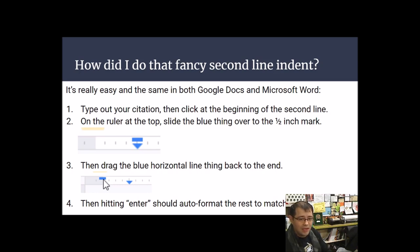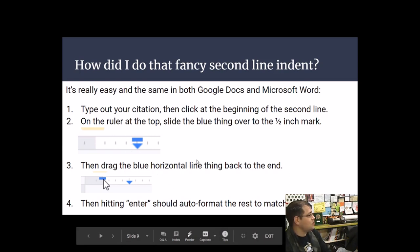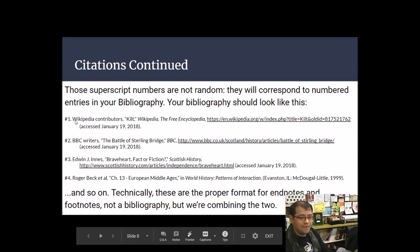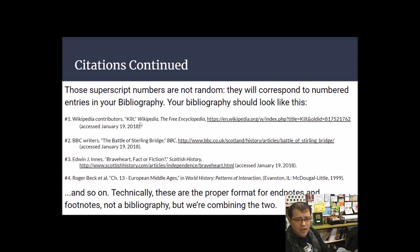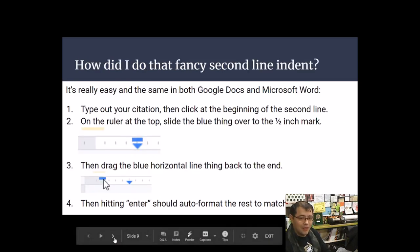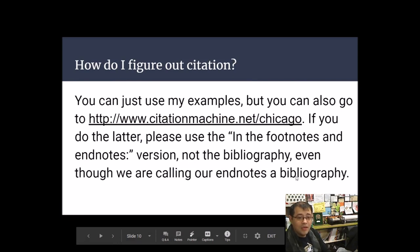To create the hanging indent for bibliography entries in Google Docs or Word: type your citation, click at the beginning of the second line, slide the indent marker on the ruler to the half-inch mark, then drag the top marker back to the margin. After the first entry, hitting Enter should auto-format the rest of the bibliography to match.